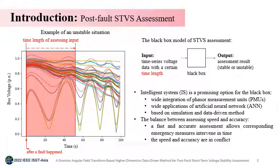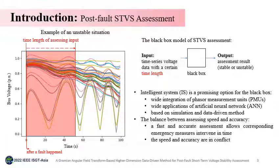STVS assessments can be described as a black box model, for which the input is real-time voltage with a certain data length, as the red shadowed area shown, and the output is a conclusion: stable or unstable. The traditional methods, which mainly include the time domain simulation and the lookup pattern, can be time-consuming and over-dependent on human operators. These methods cannot cover a large variety of unstable conditions for nowadays power systems. Fortunately, the widely applied AI makes intelligent systems a promising option, which allows the assessment module to carry out data-driven learning before deployment, so as to achieve fast and accurate online assessing.